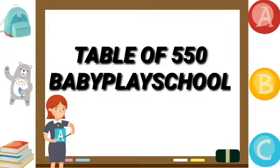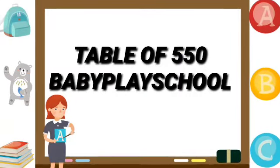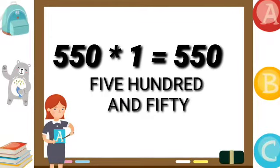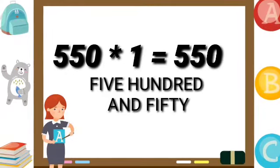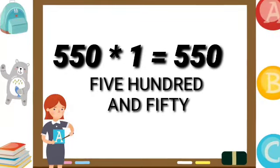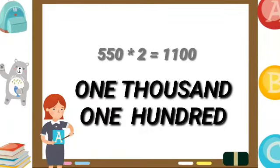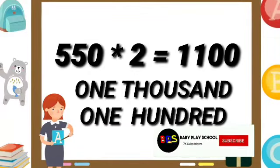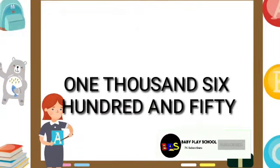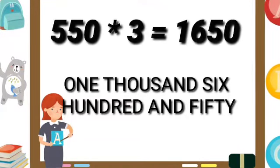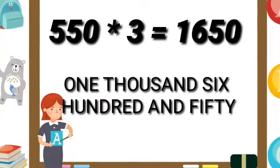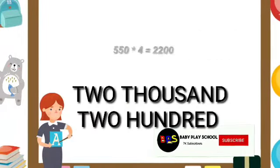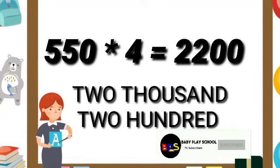Let's start table of 550. 550 ones are 550. 550 twos are 1100. 550 threes are 1650.